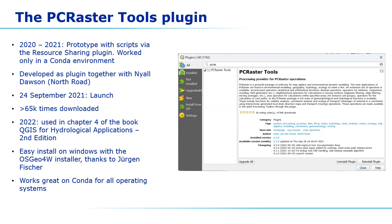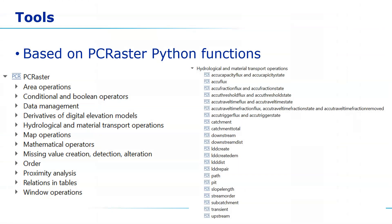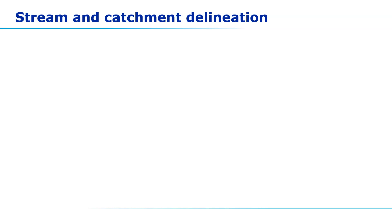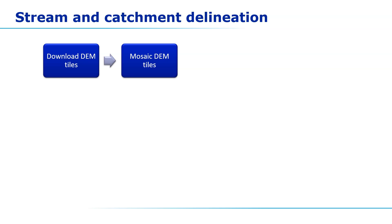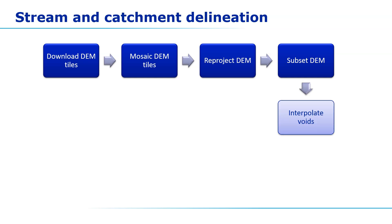It still works great on Conda for all operating systems. Therefore now around 100 map algebra operations are available through the processing toolbox. In the stream and catchment delineation workflow we can use tools from different processing providers to make it more tailored to our study area. The generic workflow is that we first need to download the DEM. If it's provided in tiles we need to stitch those tiles together, which is called mosaicing. Then we often need to reproject the DEM because we can't use a geographic coordinate system.